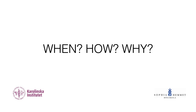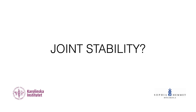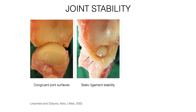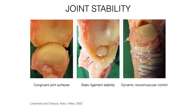Before we move into the when, how, and why of carpal instability, we must ask ourselves another question: what is joint stability? Joint stability was clearly defined by Linscheidt and Dobbins in 2002 as dependent on congruent joint surfaces, the static stability from ligaments, and the dynamic neuromuscular controls from muscles acting on the joint.